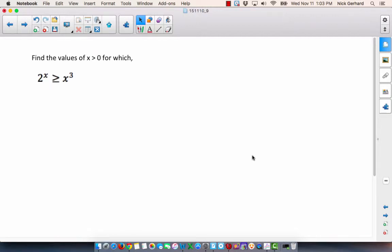Hi everybody, just wanted to go over one of the homework problems from last night I assigned. When we're looking at these graphs, we wanted to find the values of x greater than 0 for which 2 to the x is greater than or equal to x cubed, sorry.